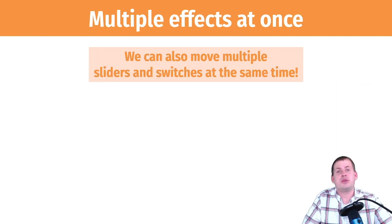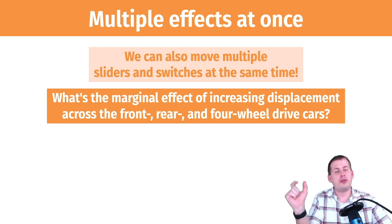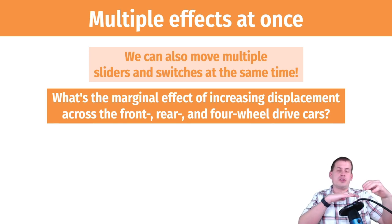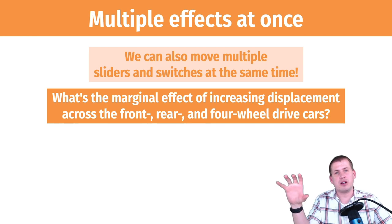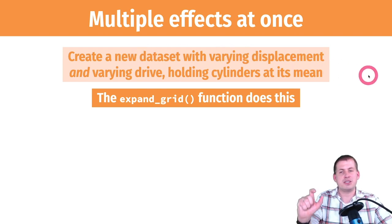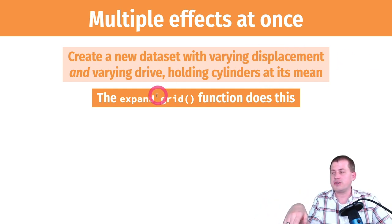Another thing we can do is move multiple sliders and switches at the same time. For instance, what is the marginal effect of increasing displacement for all three types of drive — front, rear, and four-wheel drive cars? We move displacement from 2 to 7 for front-wheel drive, then rear-wheel drive, then four-wheel drive. To do this we use expand_grid() instead of tibble(). expand_grid() creates a dataset using every combination of what you feed it.